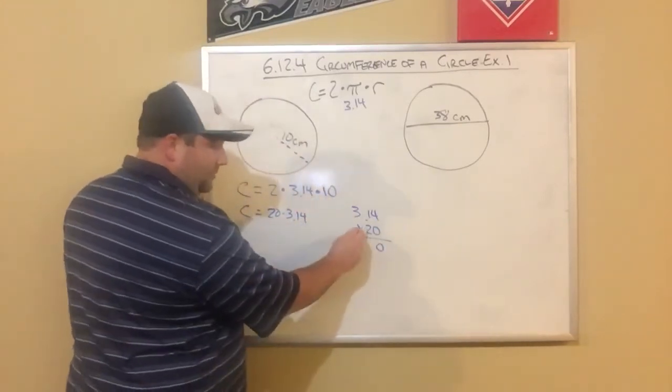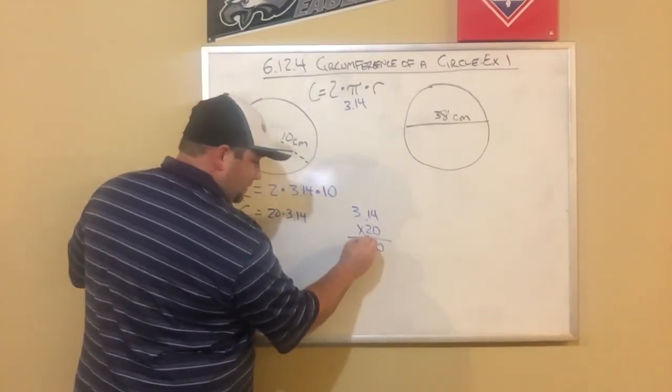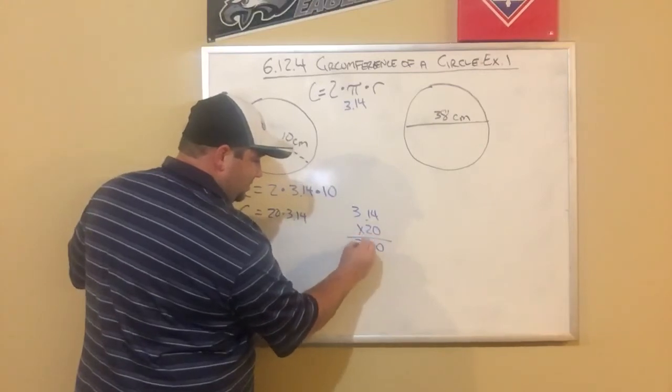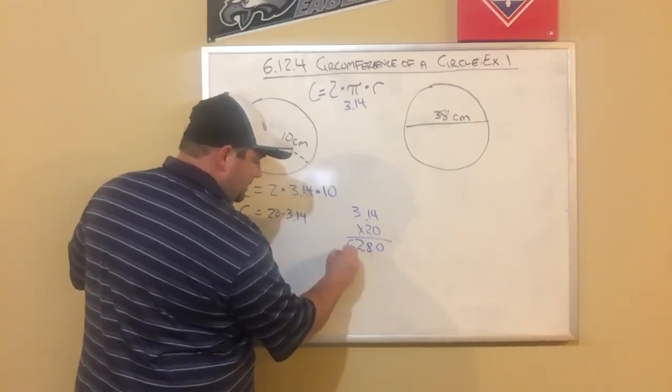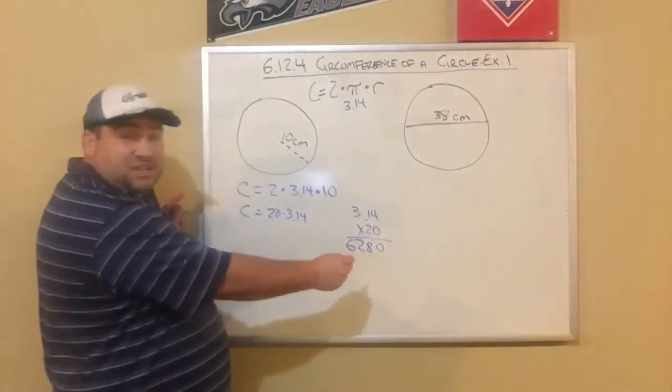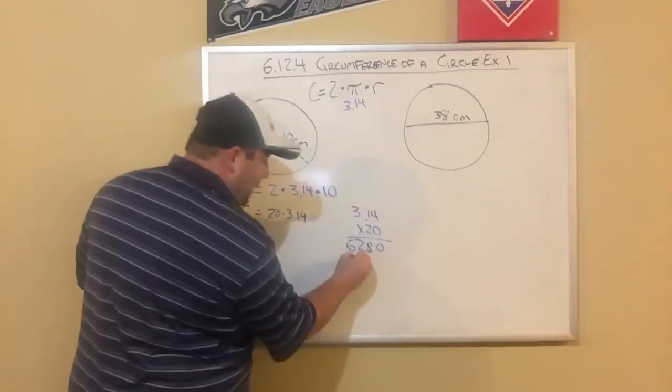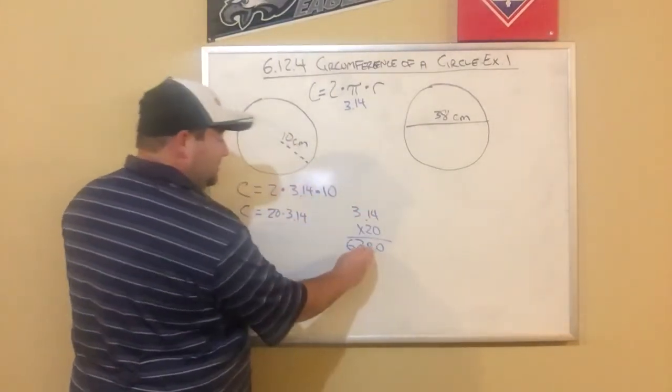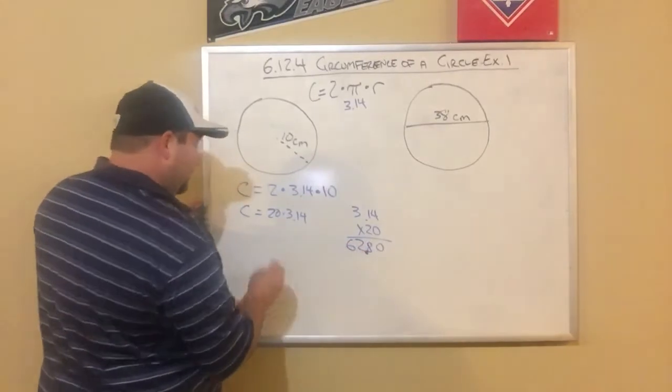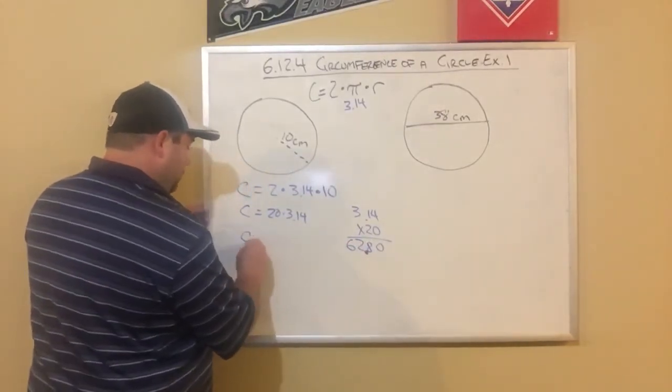0 times everything is 0. Then 2. 2 times 4 is 8. 2 times 1 is 2. 2 times 3 is 6. There's two digits after the decimal in the original problem. So two digits in our answer. So it's just going to be 62.8.